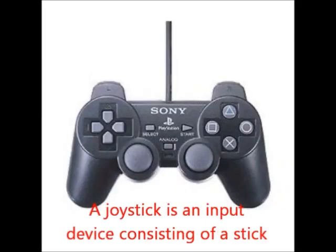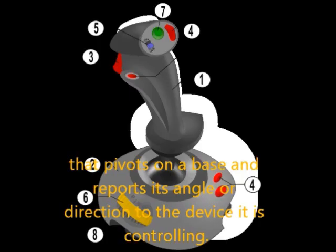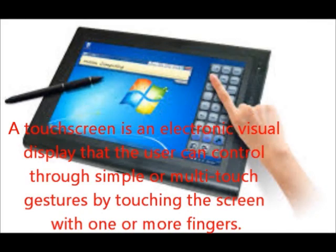Next is joystick. A joystick is an input device consisting of a stick that pivots on a base and reports its angle or direction to the device it is controlling. Next is touch screen — an electronic visual display that the user can control through simple or multi-touch gestures by touching the screen with one or more fingers.